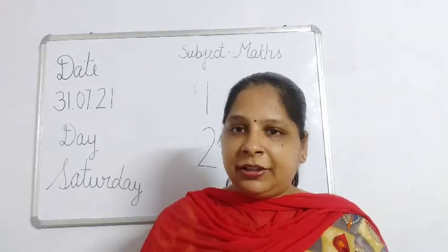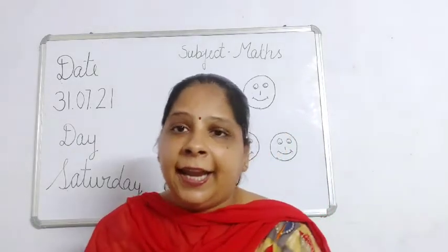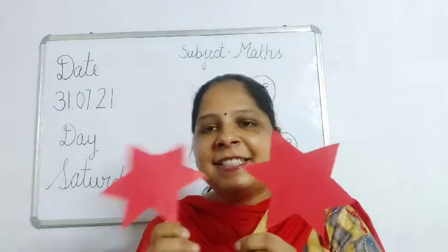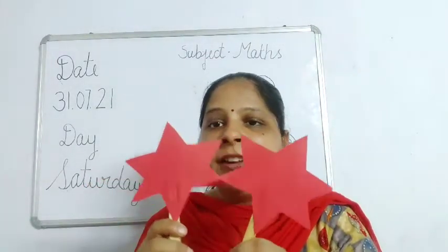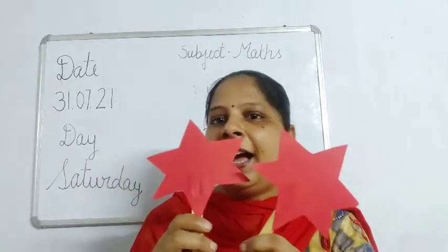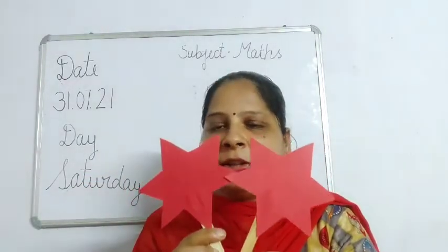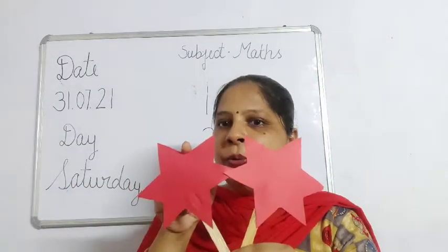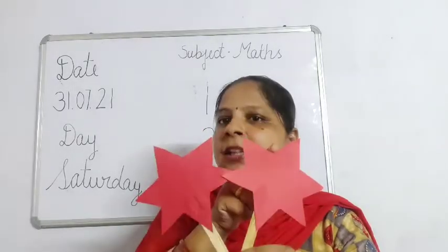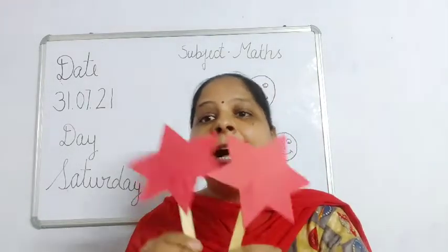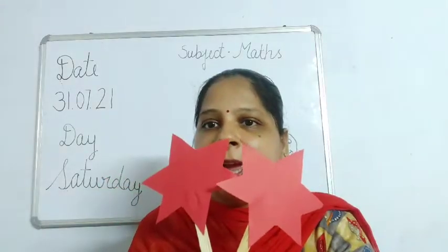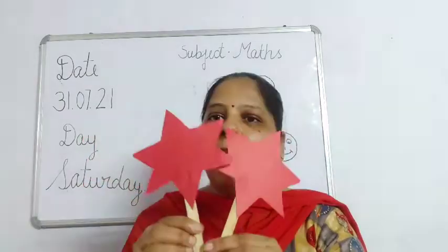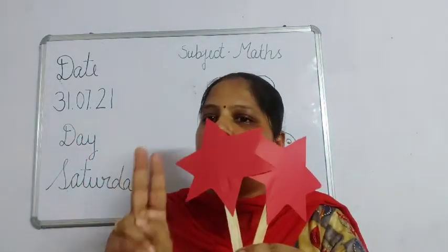So children, after this, what do I have in my hand? These are stars. What are these? These are stars. So let's count them. 1, 2. So children, tell me — how many stars do I have? I have 2 stars.